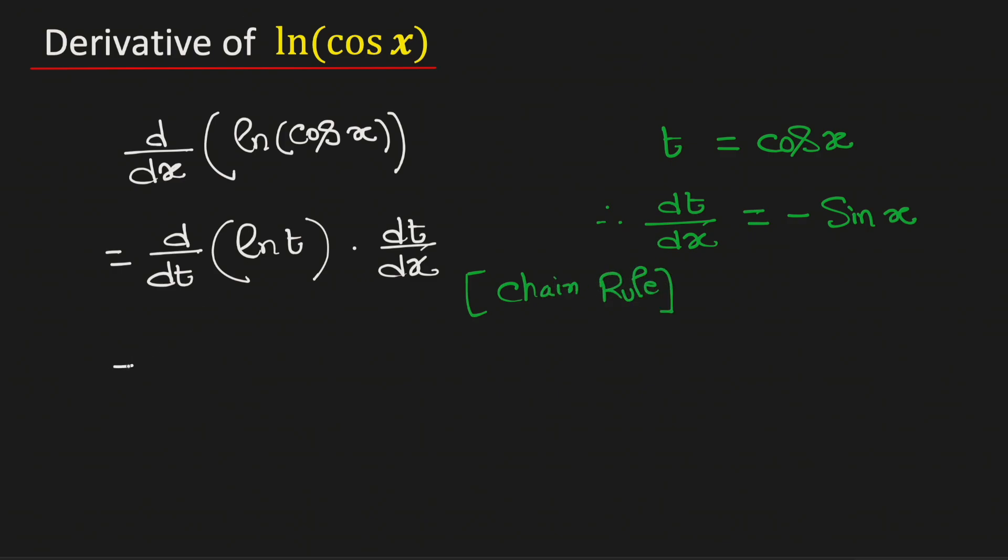Now we know that the derivative of ln t with respect to t is equal to 1 over t, and dt/dx is equal to negative sine x.